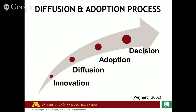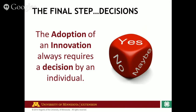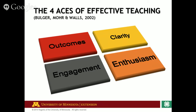So we have innovation, diffusion, adoption, and the last step is going to be the decision-making process. The adoption of an innovation, whether it's a product or a concept, always requires a decision by the individual to adopt that and continue using it. So we know what might motivate someone to want to learn something new. Now we need to understand how do we effectively communicate concepts and ideas to people.